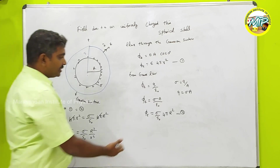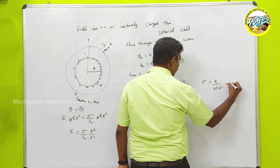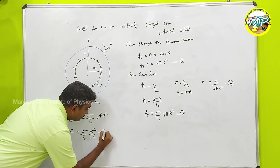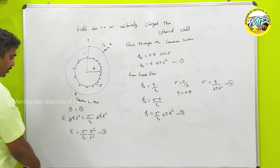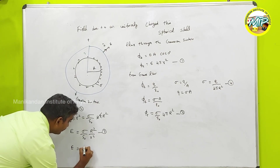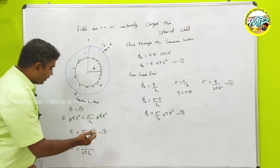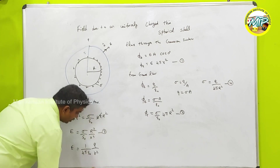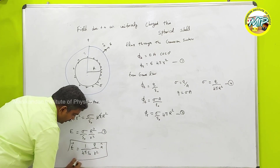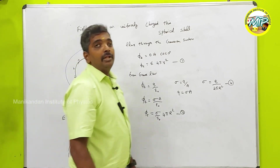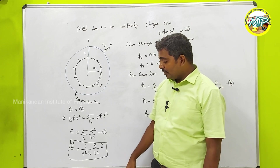If I replace sigma with Q by 4πR² (equation 4 into equation 3), I can write E equals 1 over 4πε₀ times Q by R². This is the electric field at point P in vector form using a unit vector. This is nothing but the electric field due to a point charge — the uniformly charged shell behaves exactly like a point charge outside it.